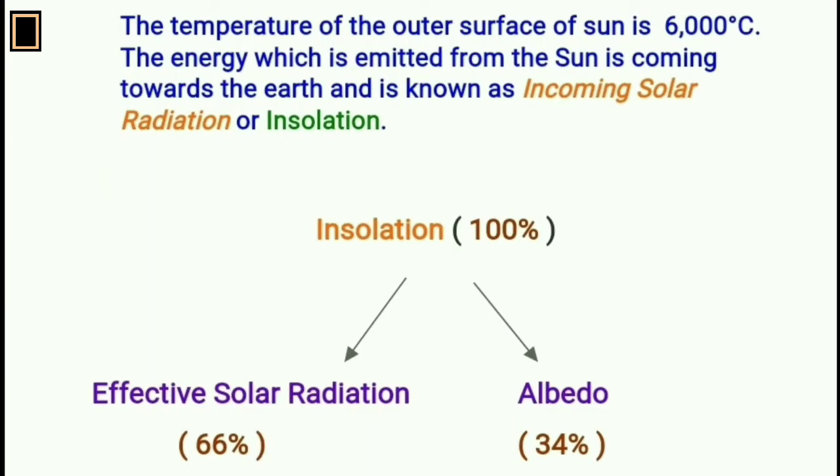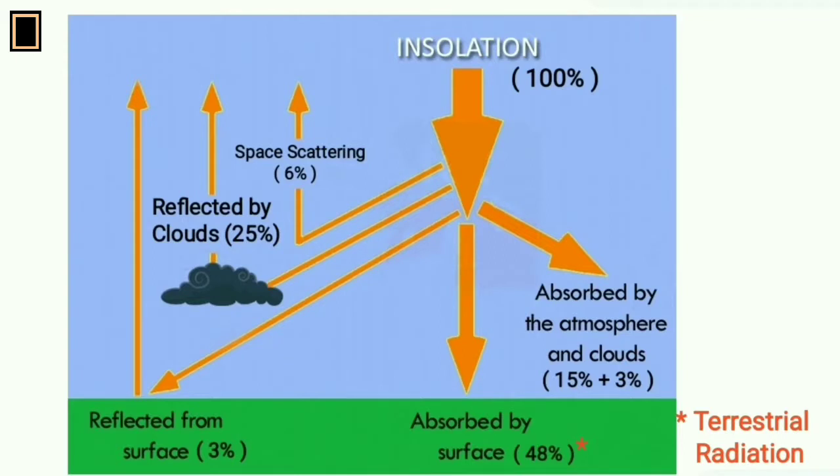Insolation is considered as 100%. It can be classified into two: effective solar radiation 66% and albedo 34%. Among the insolation or 100%, 34% is reflected or refracted back to the space which is known as albedo.